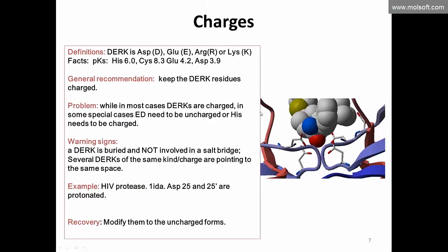Regarding charges: when you convert an ICM object, you generally keep charged residues charged, since most cases they are charged. But in some special cases they may need to be uncharged, and I'll show how to do that. A classic example is HIV protease, which has two aspartic acids in the binding pocket, and one or both may be protonated depending on the ligand inside. So let's go to ICM and look at structure 1IDA.